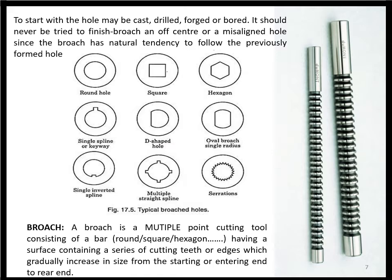For broaching, a predetermined hole is required — whether in a cast, forged, or machined component, a hole in the form of drilling or boring is required. It cannot be used to finish-broach an off-center or misaligned hole, since the broach has a natural tendency to follow the previously formed hole. Various figures show the cross-sections of different types of holes: round holes, square, hexagon, single splines, inverted splines, and multiple splines.